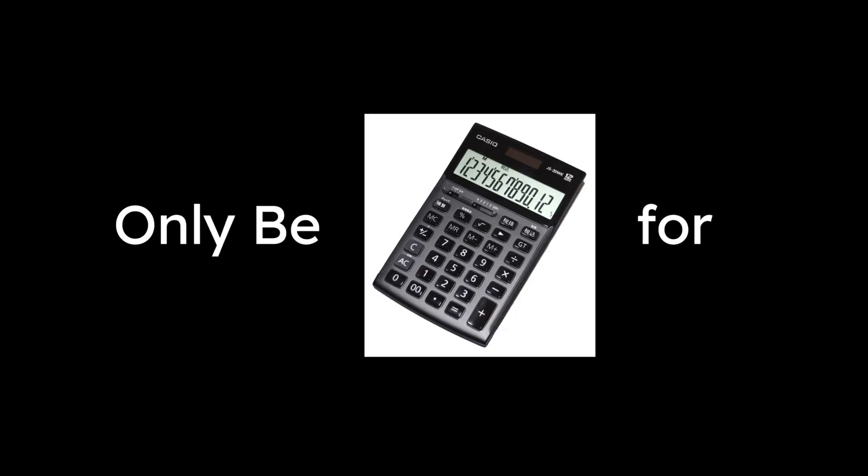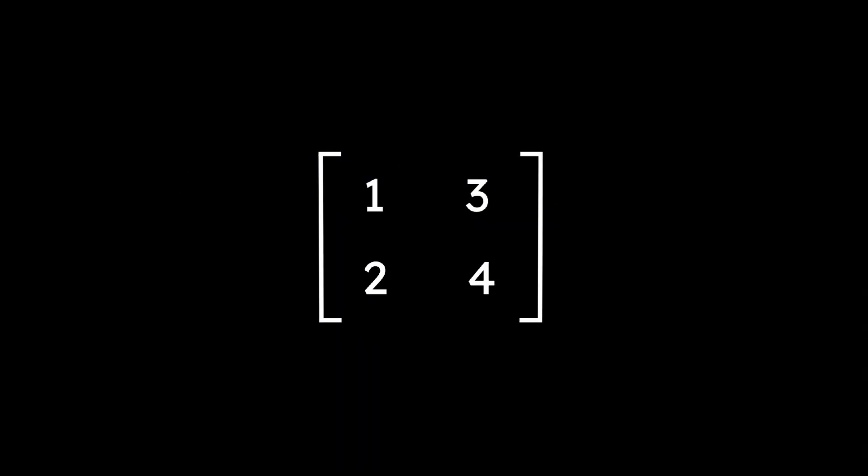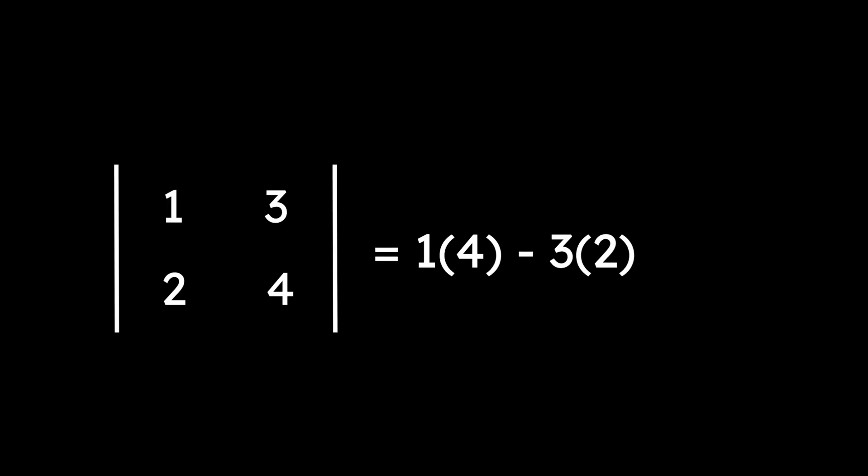The determinant of a matrix is a useful number that can only be calculated for square matrices. We represent it with either a DET symbol or bars. For a 2x2 matrix, it's calculated with this formula. For example, if you have the matrix 1, 3, 2, 4, the determinant would be 1 times 4 minus 3 times 2, which equals negative 2.